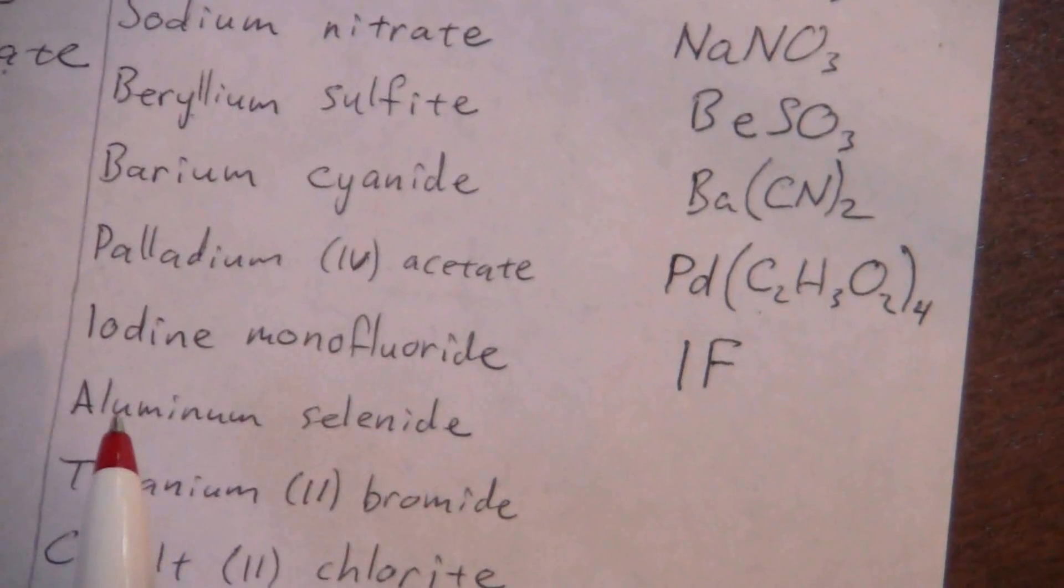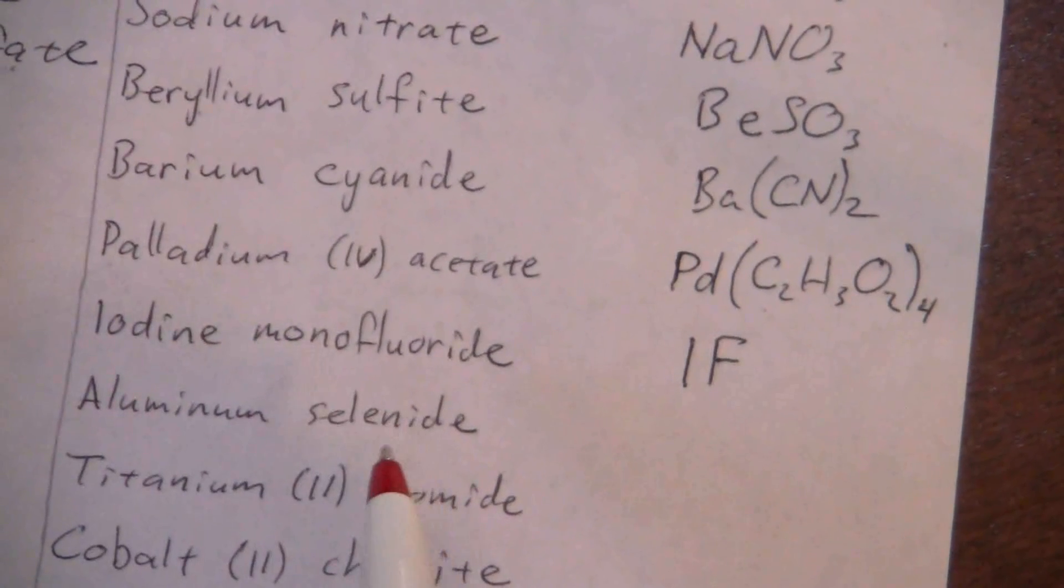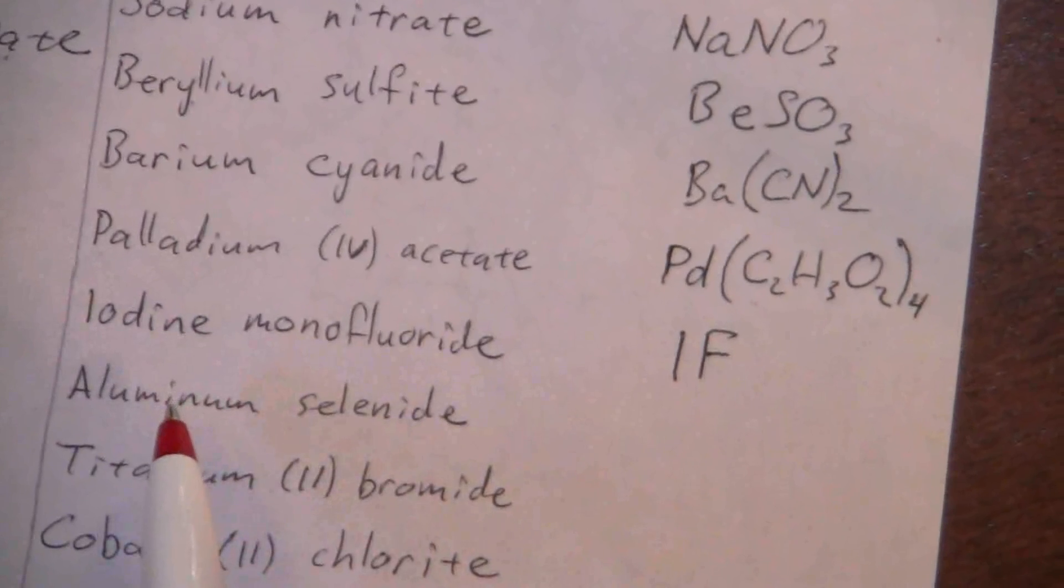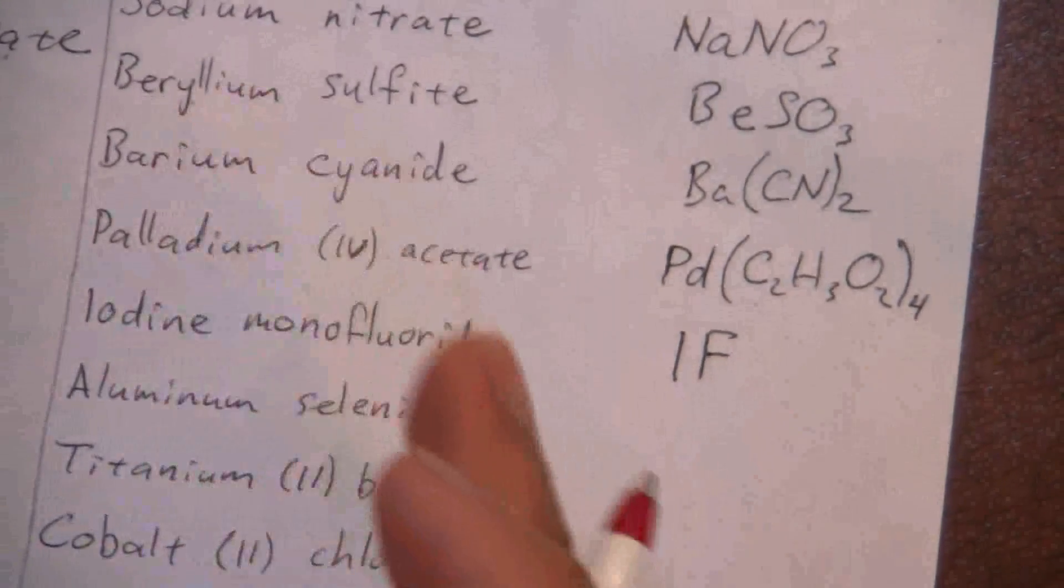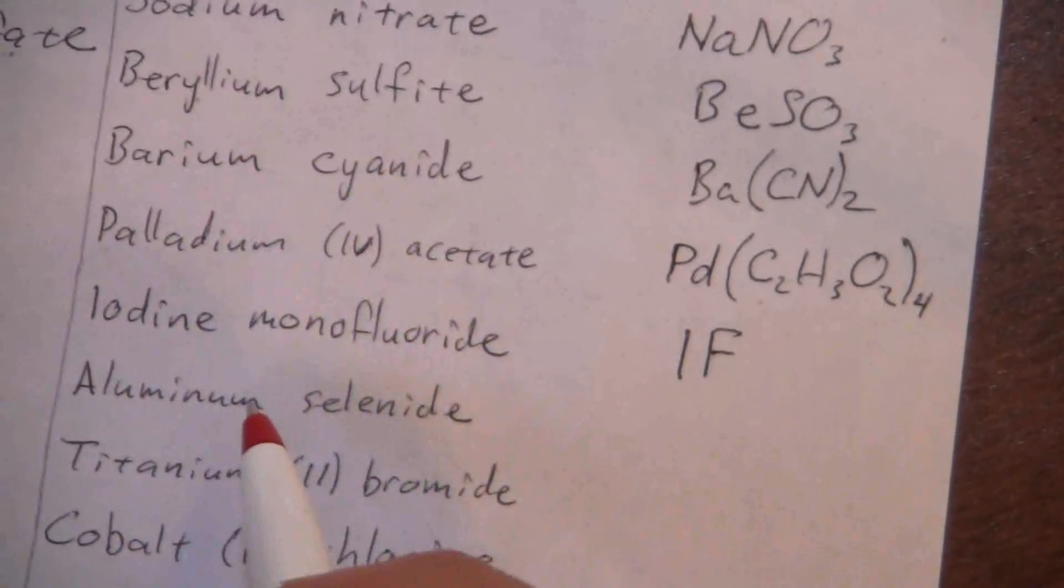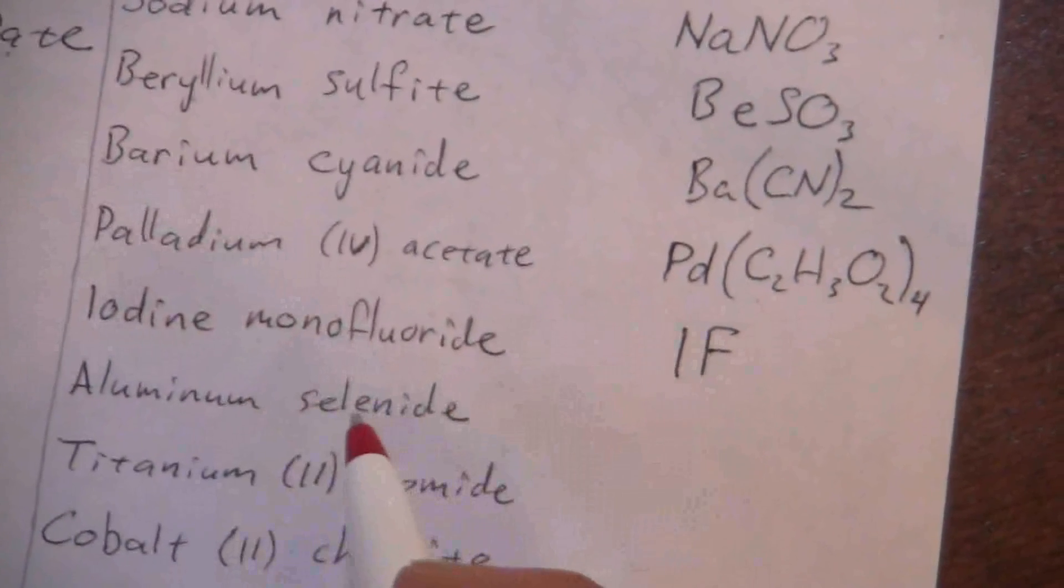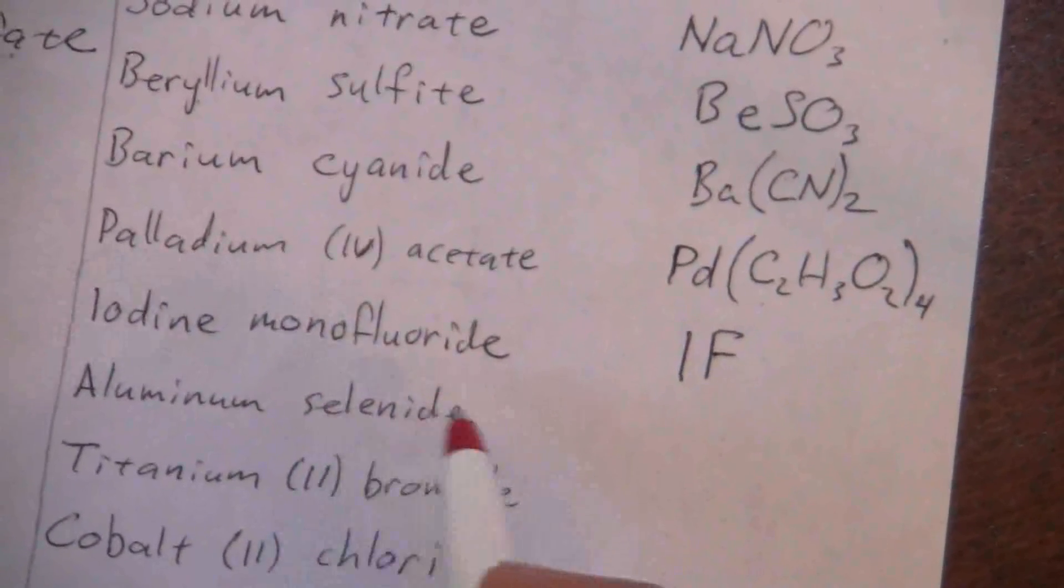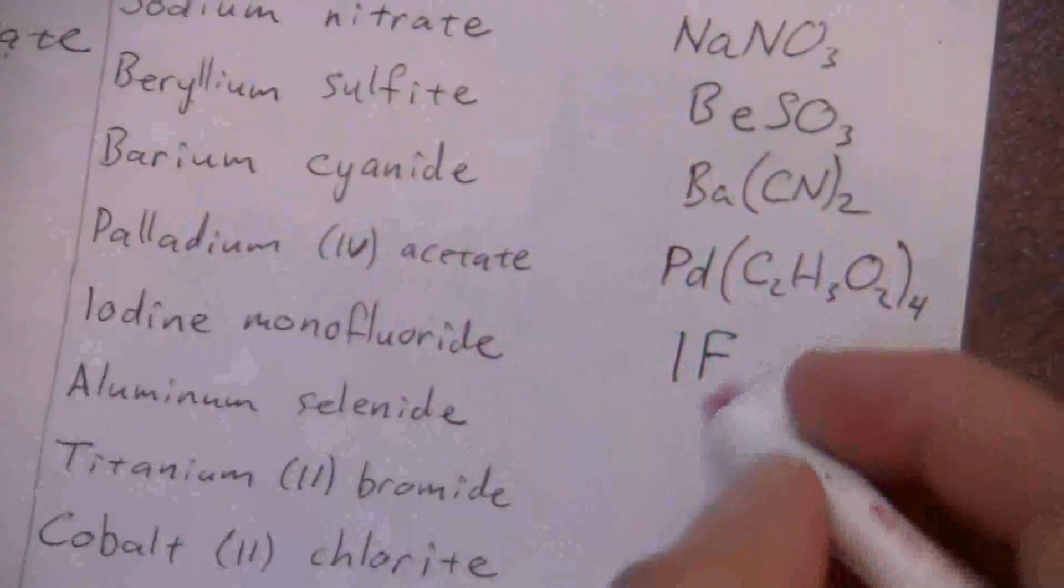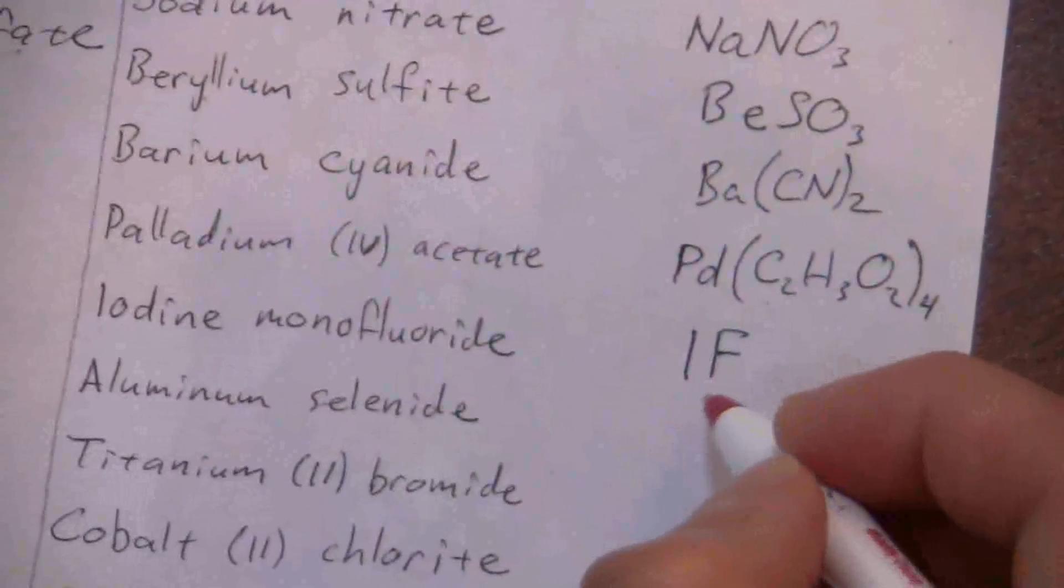Here we have aluminum selenide. Aluminum is in that first column after the transition metals, has a plus three charge. Selenide is in the negative two column under oxygen and sulfur.